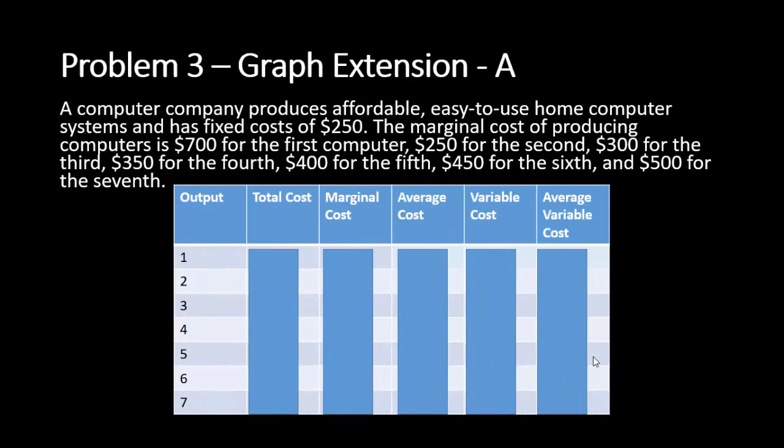Problem three is going to be an extension where we graph all the average cost lines, average variable cost lines, and our marginal cost lines, to give us a feel for the shutdown point and the break-even point. I encourage you to go ahead and calculate these on your own, then watch the video to check your work. If you have no idea how to do it, watch the video for guidance.